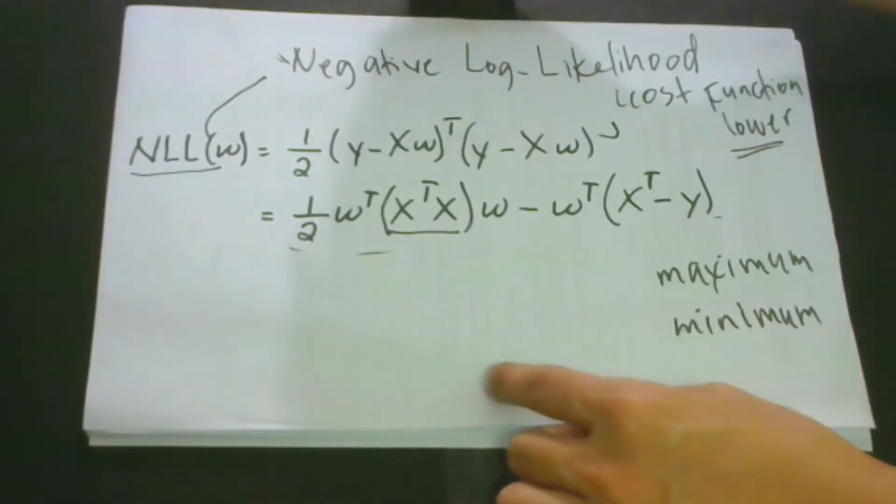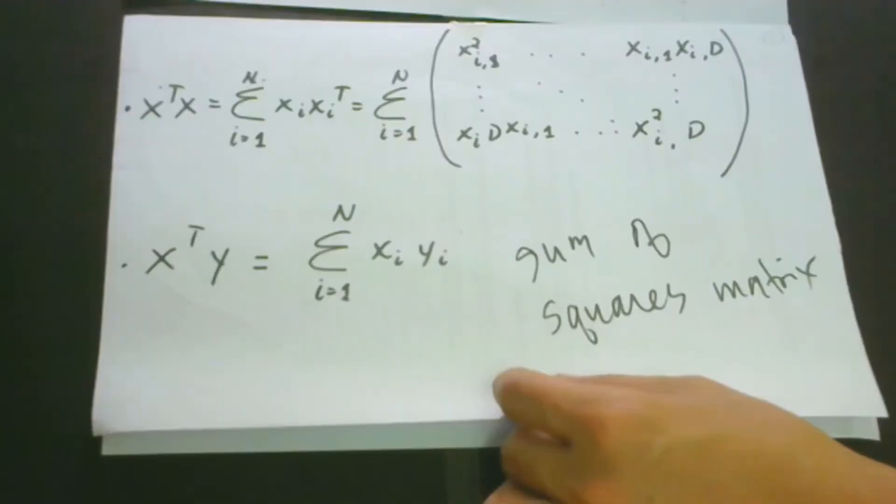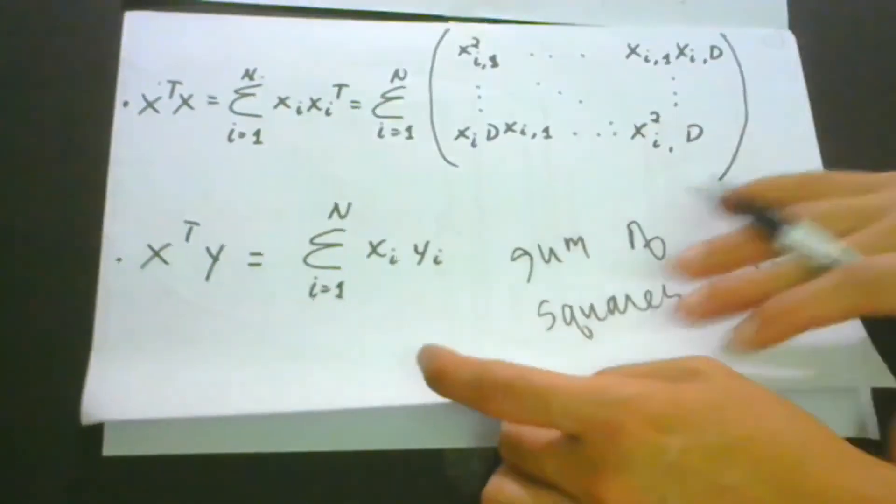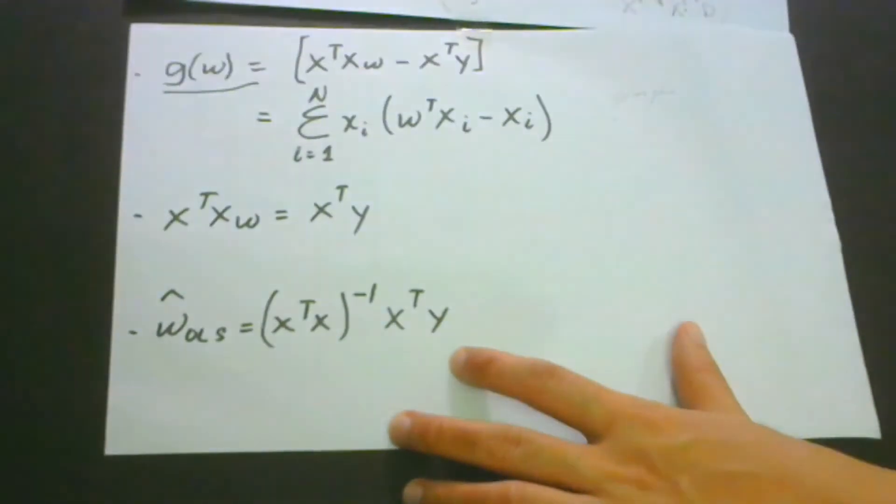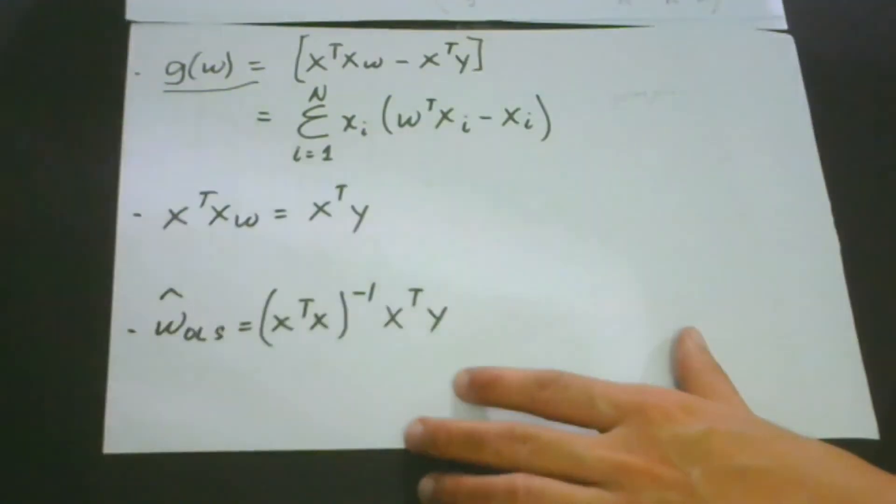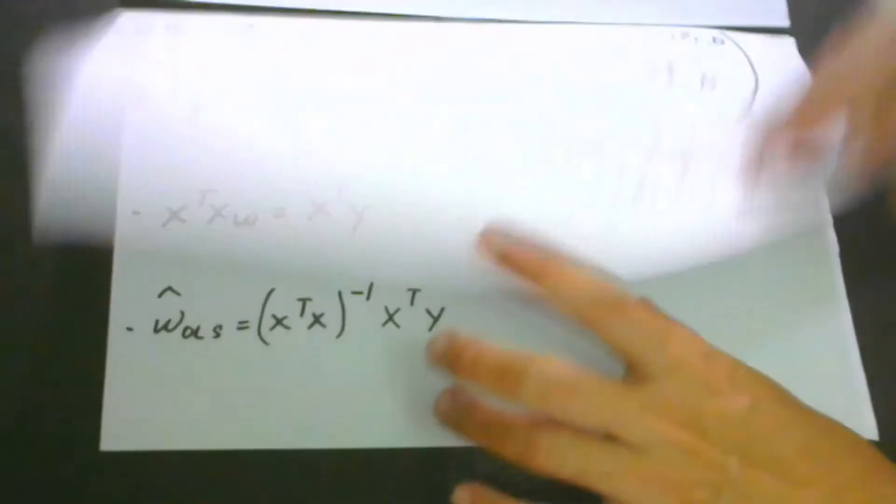Because we are concerned with the negative log likelihood, we are getting the minimum. When we process all of these things, we can arrive at the gradient of w. The gradient of w says that we do the multiplication of x transpose x and w, then minus x transpose y.